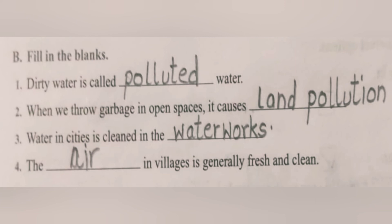Part B: Fill in the blanks. First: Dirty water is called — polluted water. Second: When we throw garbage in open places, it causes — land pollution. Third: Water in cities is cleaned in the — waterworks. Fourth: The dash in villages is generally fresh and clean — air.